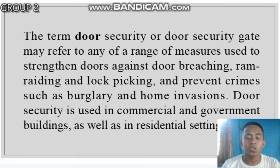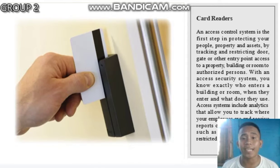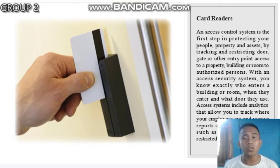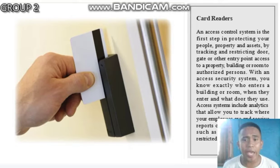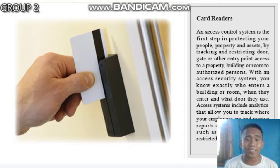We have six types of door security. The first type is card readers. A card reader is an access control system — it's the first step in protecting your people and property, restricting and tracking door, gate, or other entry point access to a building or room to authorized persons. With an access security system, you know exactly who enters a building or room, when they enter, and what door they use. Access systems include analytics that allow you to track where your employees are and receive reports on suspicious activity.